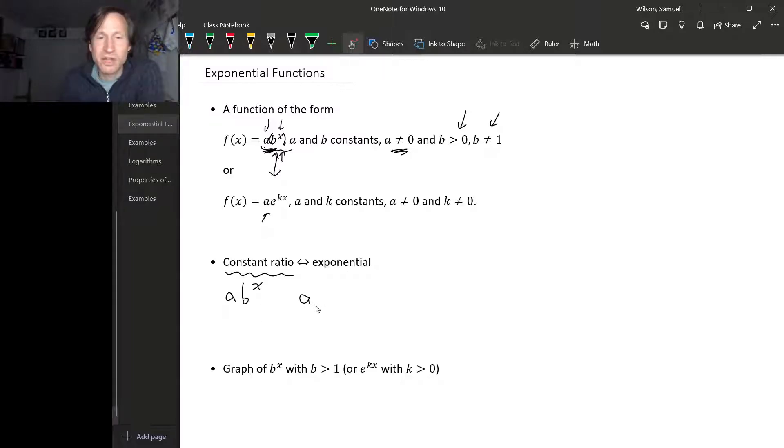say at x and x plus 1. If we plug in x plus 1, we get a times b to the x plus 1. Then if we take the ratio of these two adjacent values, we get a times b to the x plus 1 over a times b to the x. We can simplify the a's, so they're gone, giving us b to the x plus 1 over b to the x.